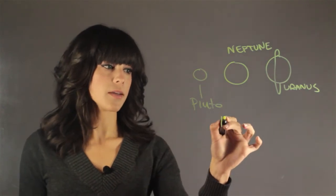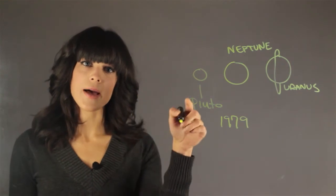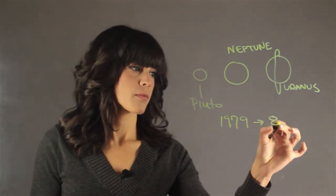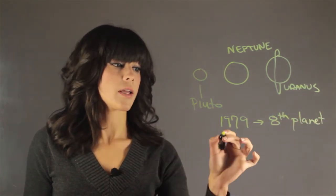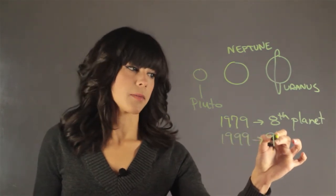Pluto, in 1979, crossed the path and actually became the eighth planet from the Sun. Then 20 years later, in 1999, it went back to being the ninth planet from the Sun.